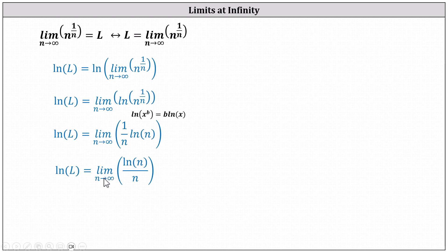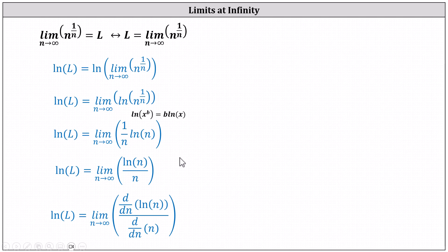Now if we consider the limit in this form as n approaches infinity, we have the indeterminate form of infinity divided by infinity, but now we can apply L'Hôpital's rule, which indicates this limit is equal to the limit as n approaches infinity of the derivative of the numerator with respect to n divided by the derivative of the denominator with respect to n.